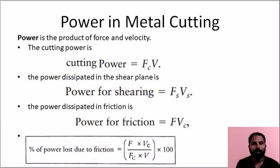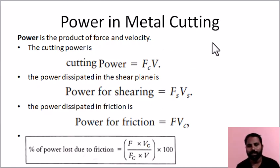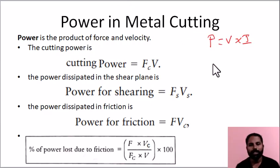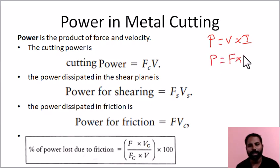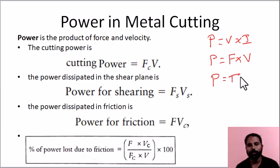Okay, power. If we say electrical power, it is voltage into current — power equals V into I. If we say a component is linear, power equals force into velocity. If we say a component is rotational — rotational motion — power equals torque into angular velocity omega.